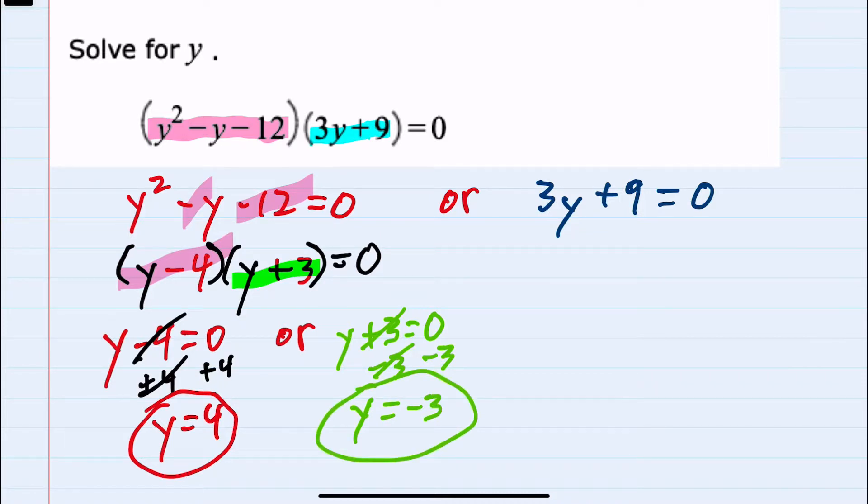And then we still have the other possibility over here on the right hand side, the three y plus nine equals zero. We can solve here by first subtracting the nine over. To isolate the y on the left hand side, that would give us a three y equals negative nine. And then dividing both sides by three to isolate the y would give us y equals negative three.